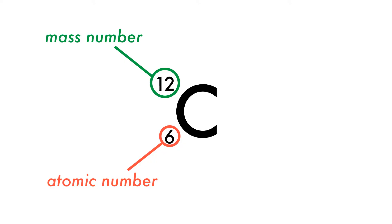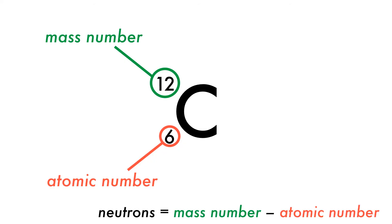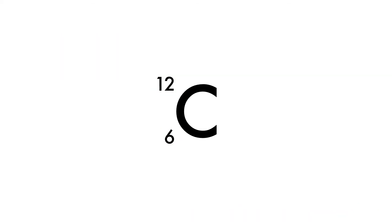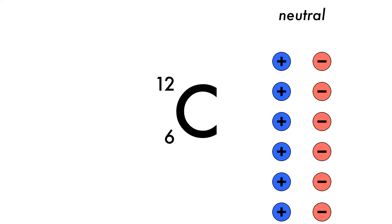Remember, to get the number of neutrons, we can subtract the atomic number — the number of protons — from the mass number. When an atom has an equal number of positive protons and negative electrons, we say that it is neutral, or has no overall charge.